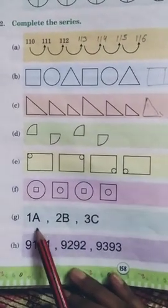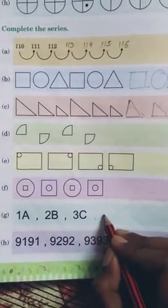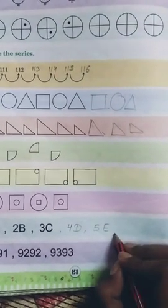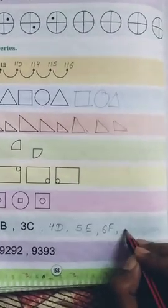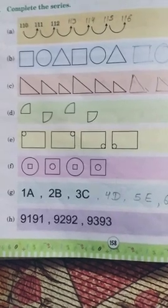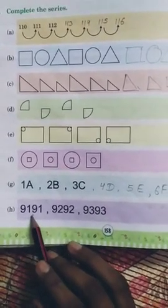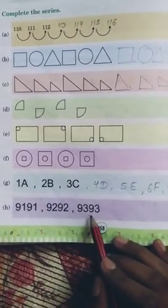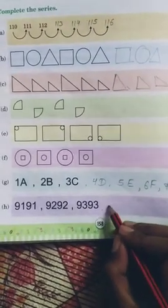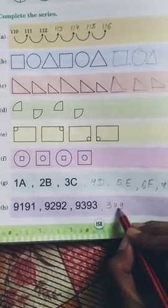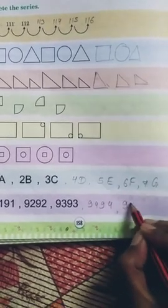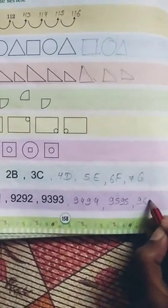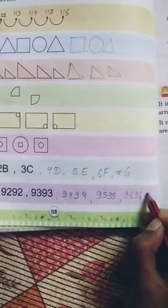Now see the G. 1A, 2B, 3C, then 4D, 5E, 6F, 7G. Now H, 9,191, then 9,292, 9,393, then 9,494, 9,595, 9,696 and then 9,797.